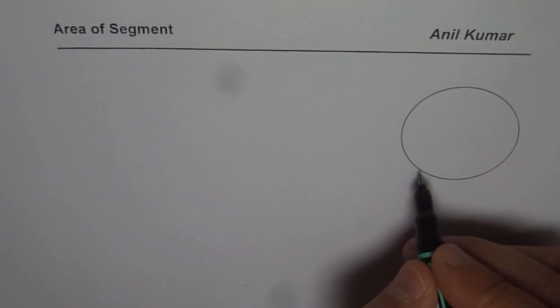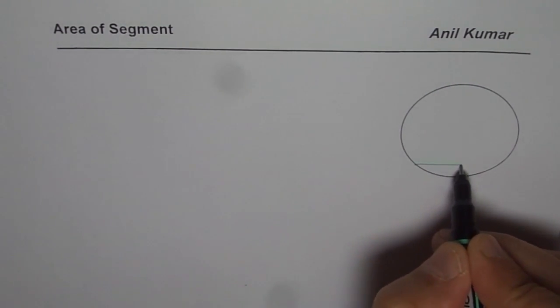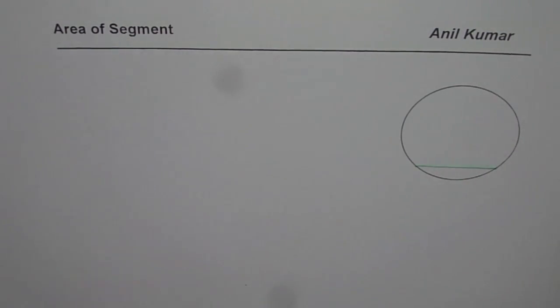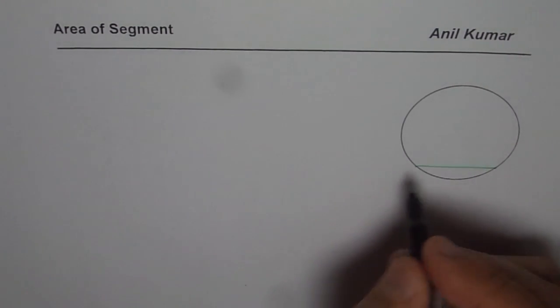So we have a circle here. If I join two points on the circumference of a circle, this is called a chord. So that is a chord.